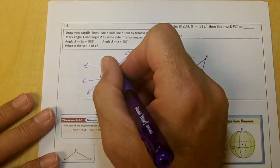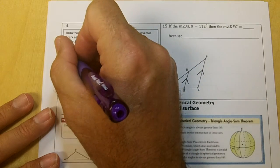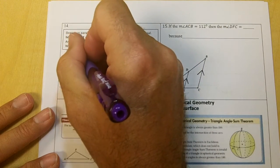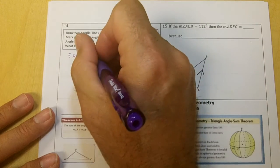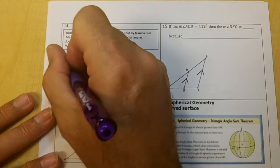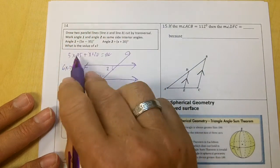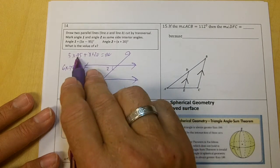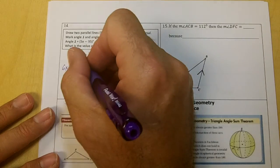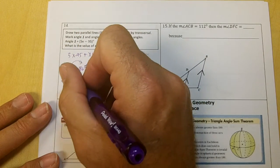They're going to add up, they're supplementary, right? We know an acute and obtuse. So 5x minus 95 plus x plus 20 equals 180. You would get 6x minus 75 equals 180. Everyone agree with that? Negative 95 plus 20 is negative 75. Move this over, you would get 6x equals 255.